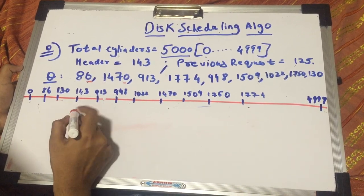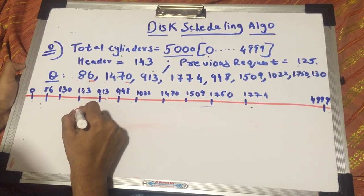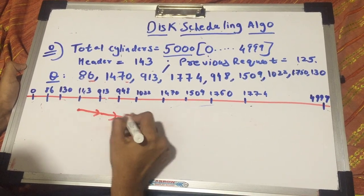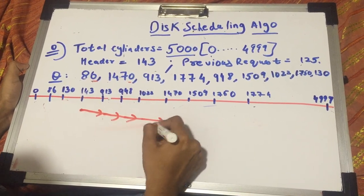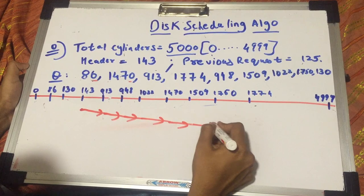So for the LOOK algorithm, we'll start at 143, we'll go to 913, then 948, 1022, 1470, 1509, 1750, and 1774.